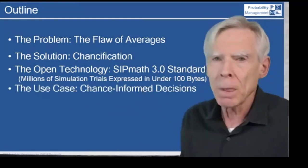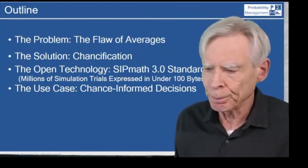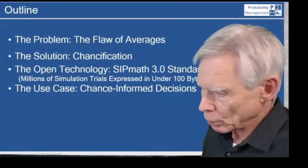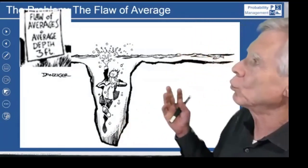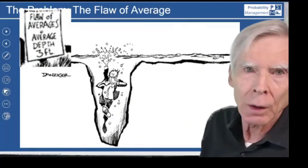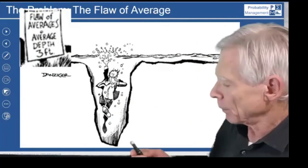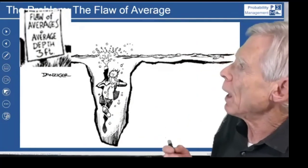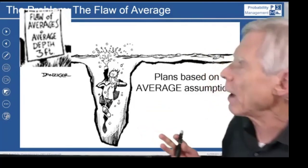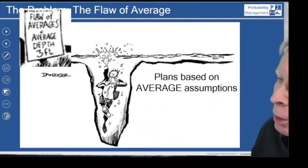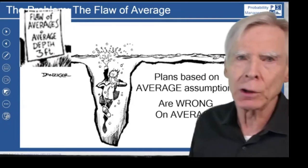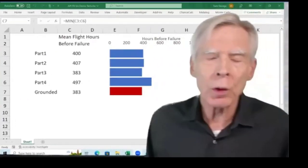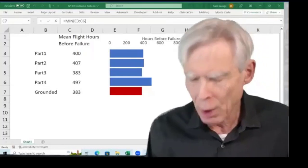Let's start with the flaw of averages. Many of you may be aware of the statistician who drowns in the river that's on average three feet deep. This is the classic example. What the flaw of averages says is that plans based on average assumptions are wrong on average.